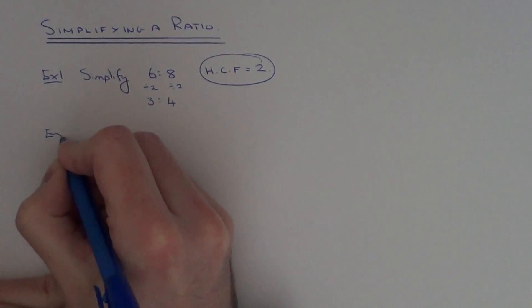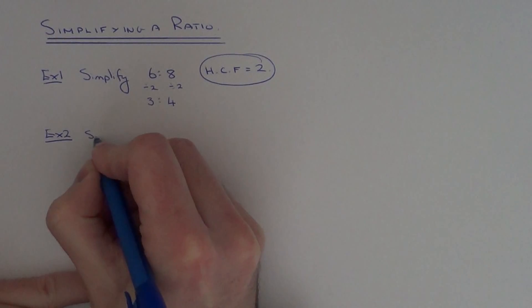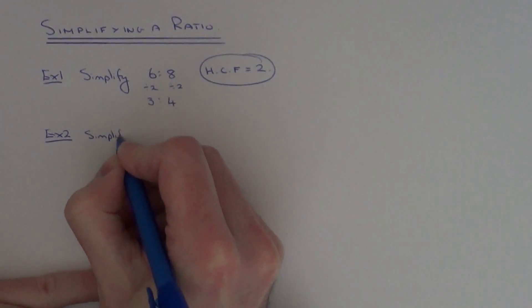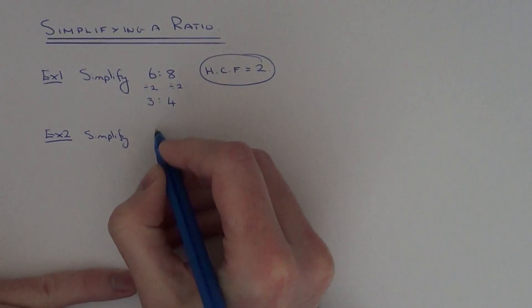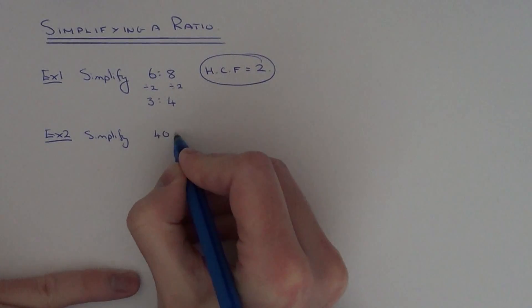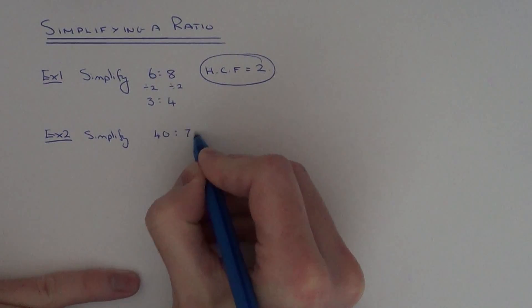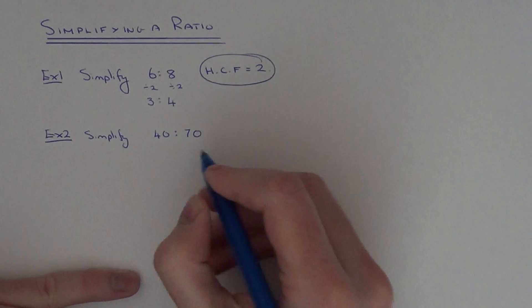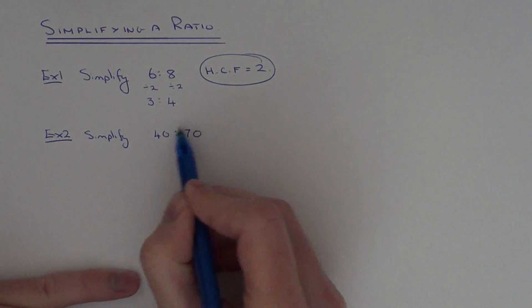So let's do another one. For example 2, we've got to simplify 40 to 70. So again, look for your highest common factor. So this time it will be 10.